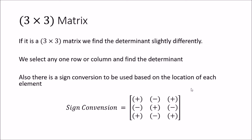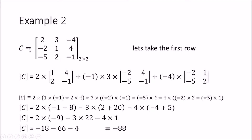We will look at an example. We have the matrix C: 2, minus 3, minus 4 in the first row; minus 2, 1, 4 in the second row; and minus 5, 2, minus 1 in the third row. To find the determinant of a 3 by 3 matrix, you can select any row or any column — the first row, second row, third row, or first, second, or third column. It doesn't matter which row or column you take; you will get the same answer. To illustrate this, we will use two different approaches, starting with the first row.